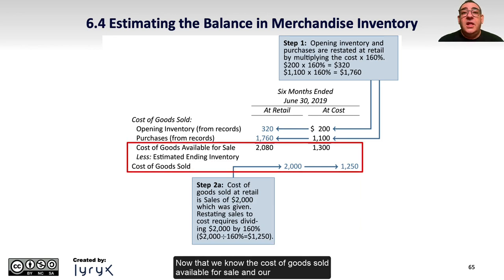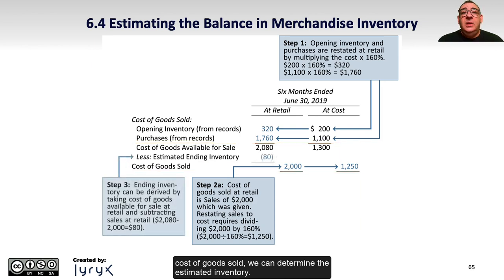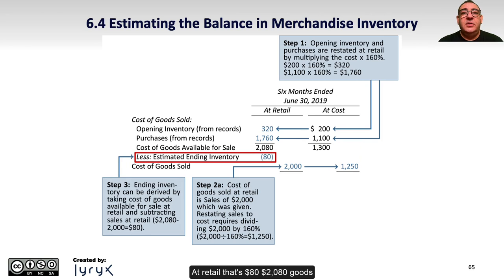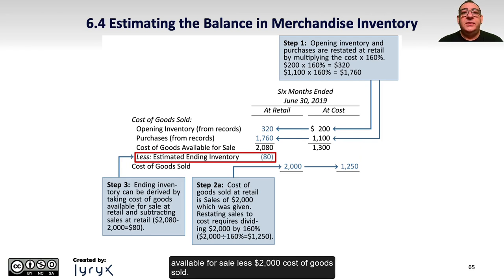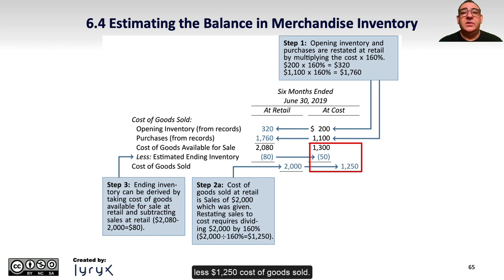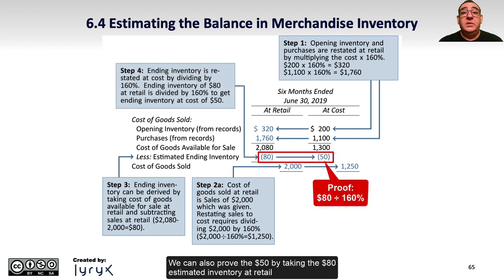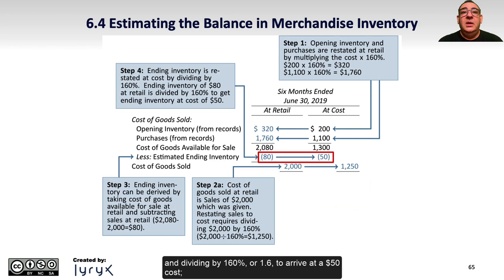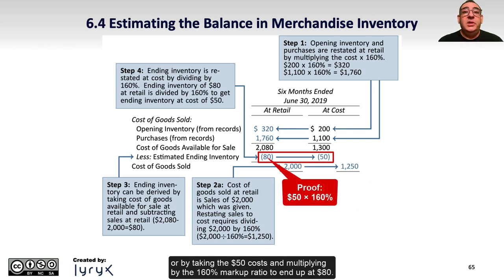Now that we know the cost of goods available for sale and our cost of goods sold, we can determine the estimated inventory. At retail, that's $80 — $2,080 goods available for sale less $2,000 cost of goods sold. At cost, estimated inventory is $50, calculated as $1,300 in goods available for sale less $1,250 cost of goods sold. We can also prove the $50 by taking the $80 estimated inventory at retail and dividing by 160%, or 1.6, to arrive at a $50 cost. Or by taking the $50 cost and multiplying by the 160% markup ratio to end up at $80.